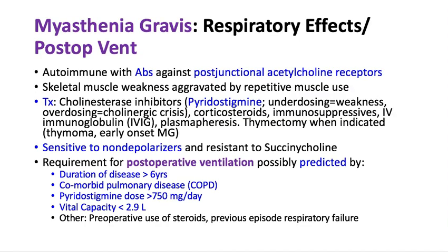The next keyword is myasthenia gravis, its respiratory effects, and prediction of postoperative ventilation. Myasthenia gravis is an autoimmune disease where antibodies form against post-junctional acetylcholine receptors, causing skeletal muscle weakness that worsens with exercise. Patients are often on cholinesterase inhibitors like pyridostigmine to raise acetylcholine levels. If underdosed, they can be weak; if overdosed, they can go into cholinergic crisis. They may also be on steroids, immunosuppressives, IV immunoglobulin, plasmapheresis, or undergo thymectomy.